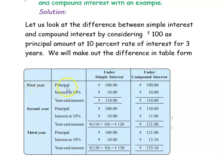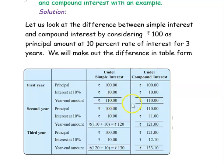For the first year, the principal is Rs. 100 and the rate of interest is 10%. At the year end, your Rs. 100 will become Rs. 110 — the interest being Rs. 10. So, if you go with compound interest, the principal is also Rs. 100 at 10% interest, so interest added will be Rs. 10, and the total amount will be Rs. 110 at the end of the first year. So in simple interest it is Rs. 110, and in compound interest it is also Rs. 110.